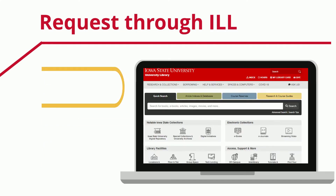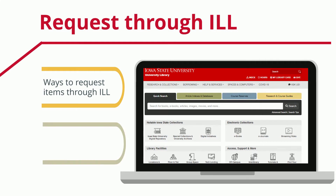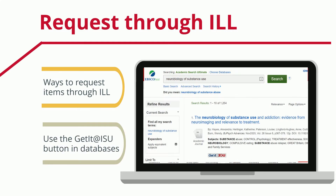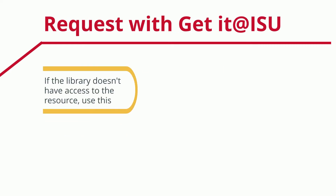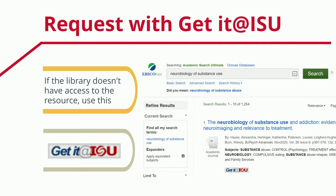There are a couple of different ways to request something through ILL. When using library databases, you will often find the Get It at ISU button. If the library doesn't have access to the resource, this will link you to the ILL request form.